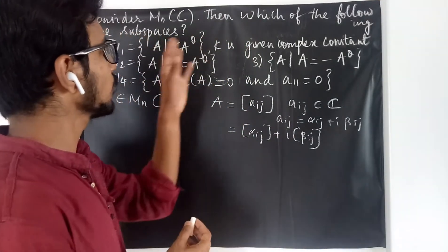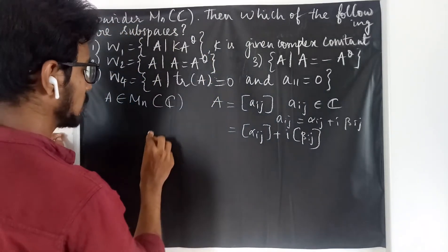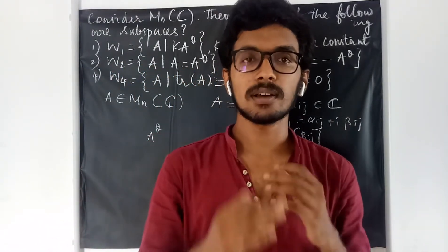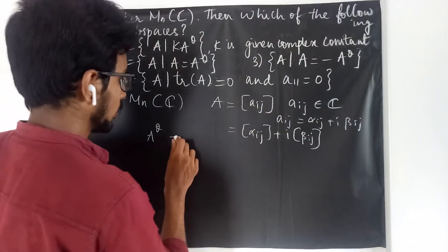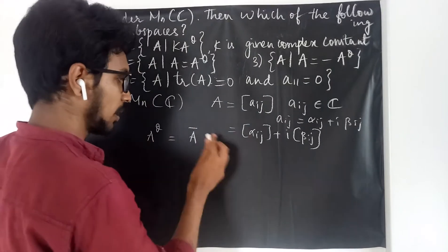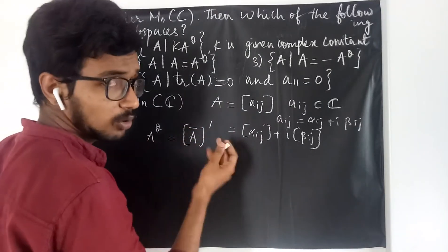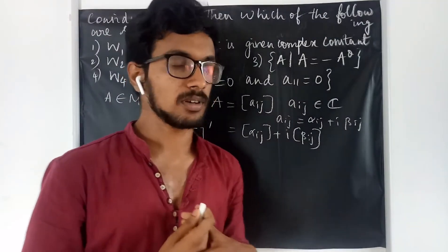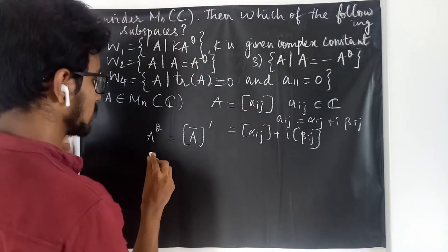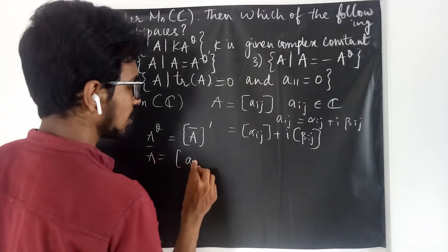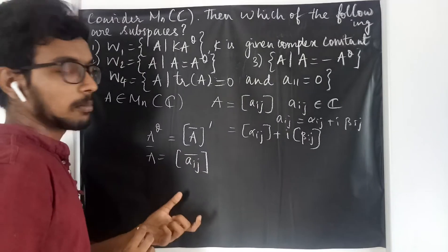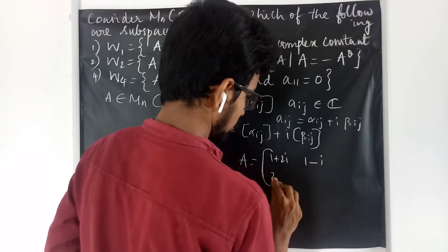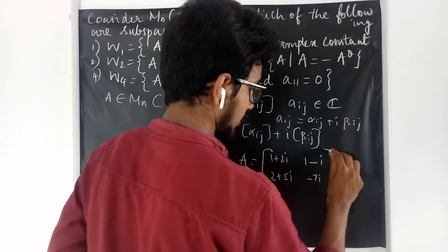Here they have specified a few more operations. This A^θ — what do we mean by this? If you are familiar with this operation, well and good; if not, let me explain. This means you take the conjugate of the given matrix and then find the transpose, or equivalently find the transpose and then take the conjugate. Taking the conjugate of a matrix means taking the conjugate of each individual element. Suppose my A is the matrix [1+2i, 1−i; 2+5i, −7i].